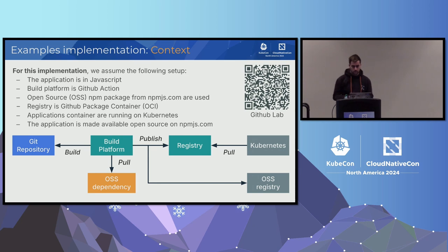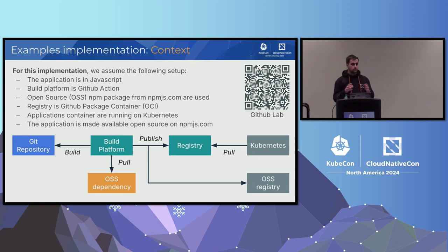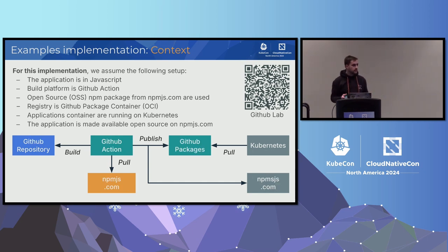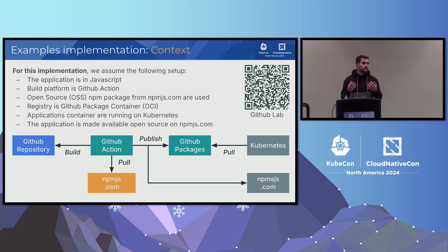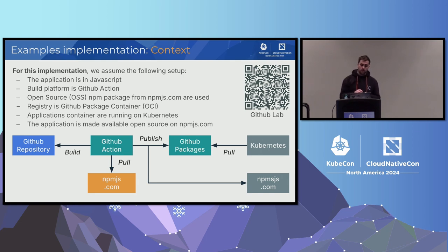Now let's deep dive into the implementation. The implementation I'm going to show you is based on a GitHub repository — you can scan the QR code. We are going to assume the following setup: we have a JavaScript application hosted inside a GitHub repository. It's an open source application. We are building our NPM packages and container images inside GitHub Actions, using dependencies from npmjs.com, pushing container images to GitHub Packages, and our Kubernetes cluster pulls images from GitHub Packages. We also publish NPM packages directly to npmjs.com.